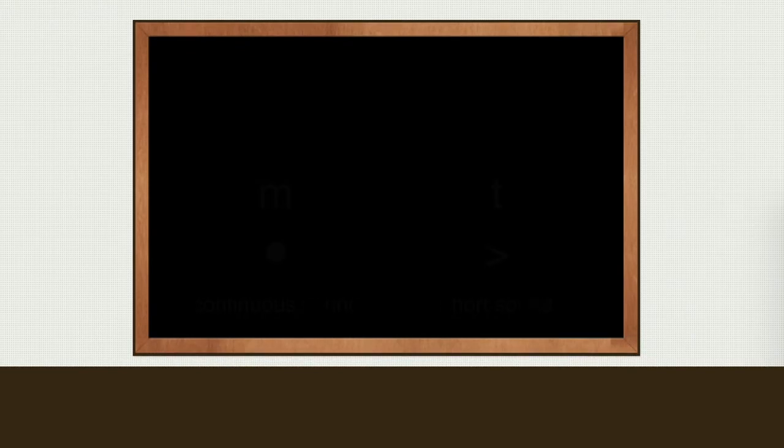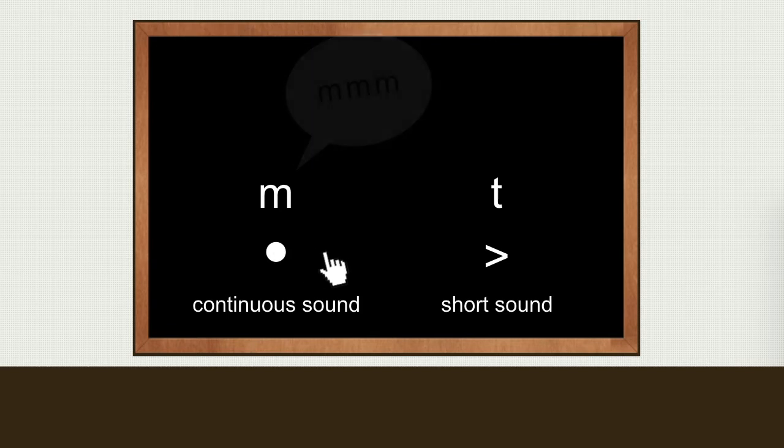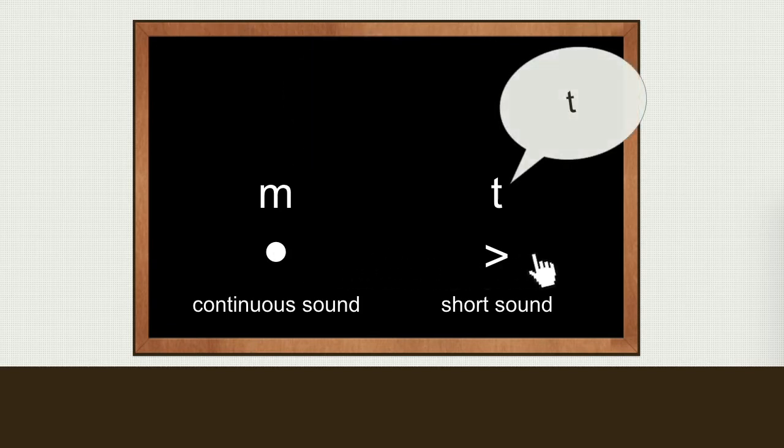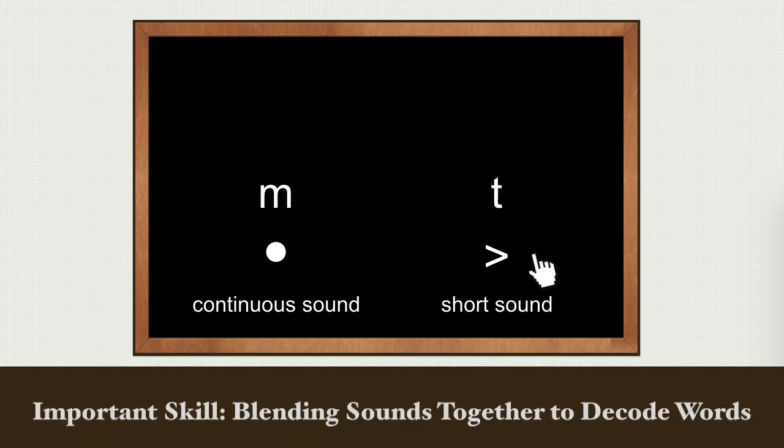Continuous sounds like 'mmm' can be held as long as you have breath. Short sounds like 't' cannot be held. It is important to know whether a sound is short or continuous when we go to our next task of blending sounds together to decode words.